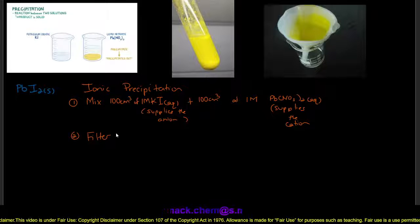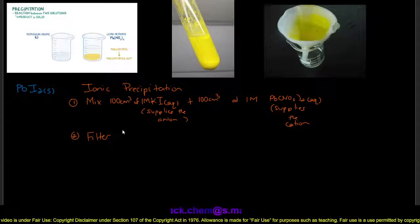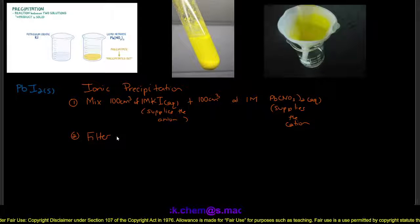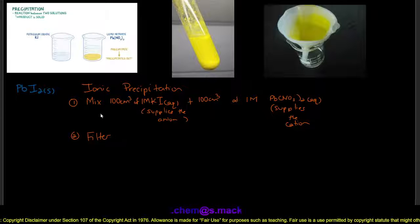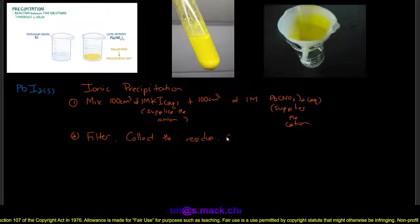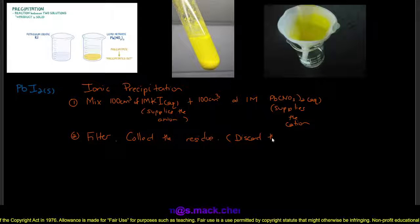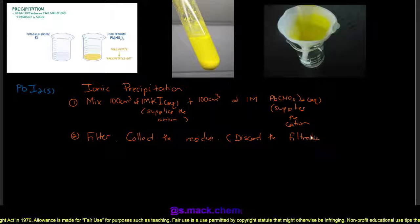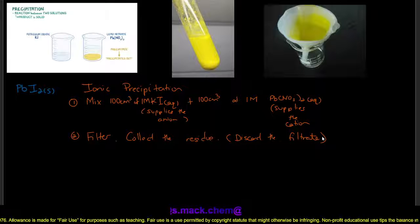In talking about filtration, you must mention what we do with the residue versus the filtrate. So we would filter, collect the residue, and you can mention that we discard the filtrate. Now the precipitate to be formed, which is lead iodide, will remain as a residue on the filter paper. You can see that lead iodide is a bright yellow solid, and you should take note of the color.